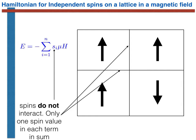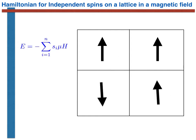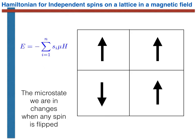Only one spin value appears in each of the terms in the summation because the spins do not interact — there are no terms in the Hamiltonian that are a function of a pair of spins or multiple spins. What is critical to understand is that when any spin or spins are flipped, the microstate the system finds itself in is changed. The fact that two states are different is easy to remember when one remembers that each particle is fixed on its lattice site — a new microstate is different because specific spins point in opposite directions compared to the previous configuration.